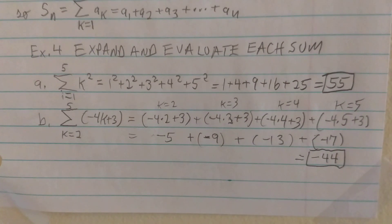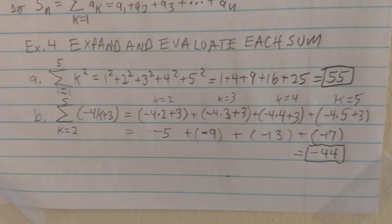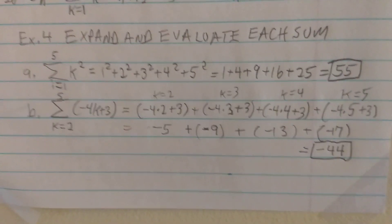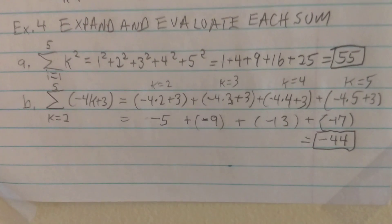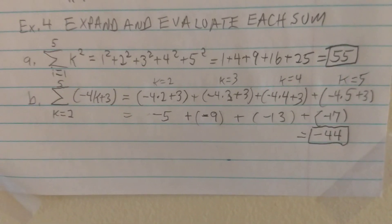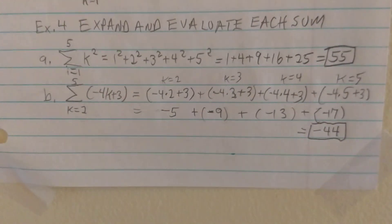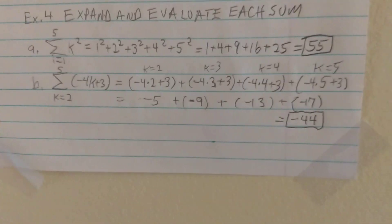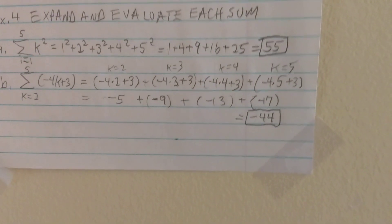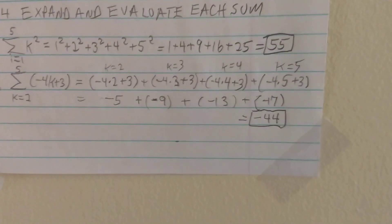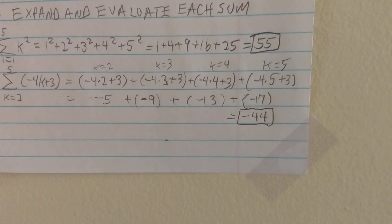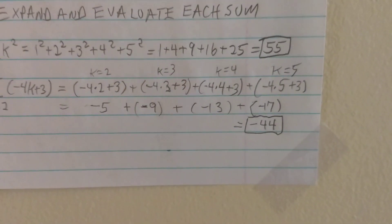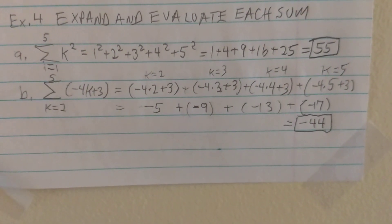In example 4, we expand and evaluate each term. First, the summation from i equals 1 to 5 of k squared simply means to add the first 5 squares: 1 squared is 1, 2 squared is 4, 3 squared is 9, 4 squared is 16, and 5 squared is 25. Adding them up on the calculator gives us 55.